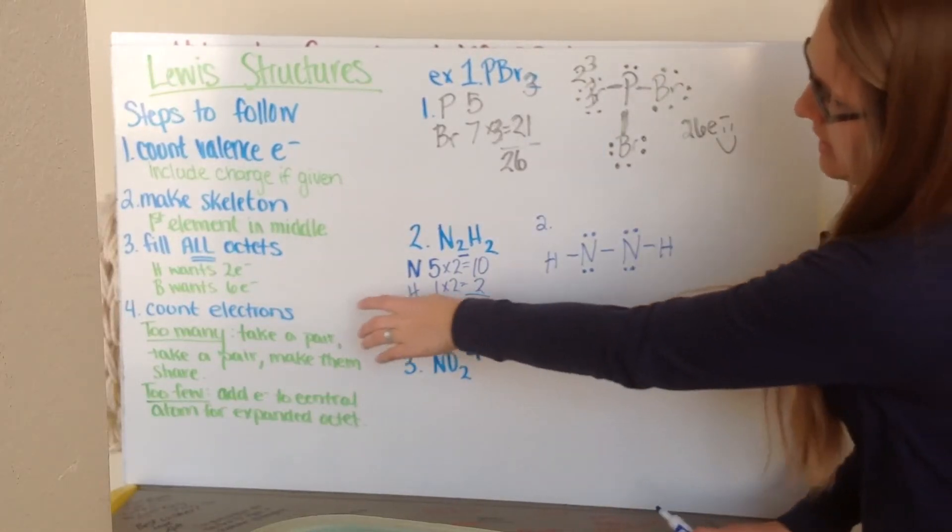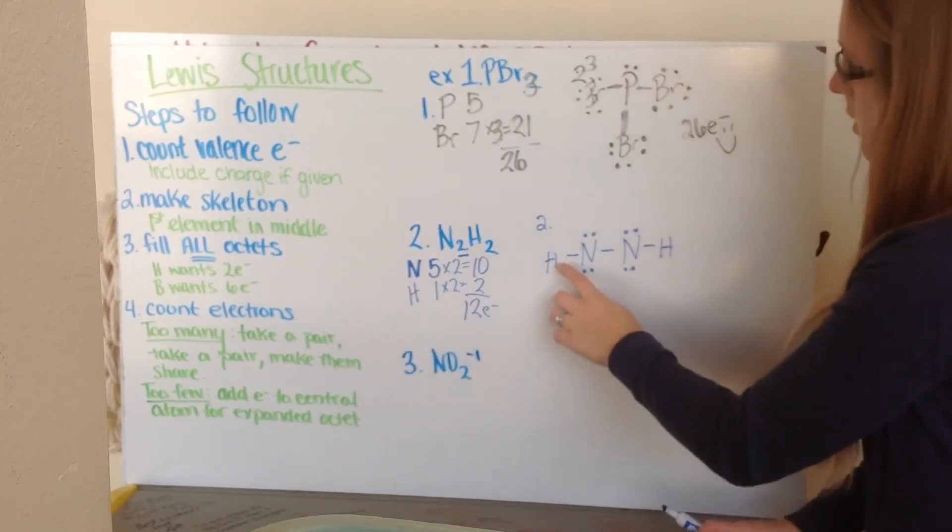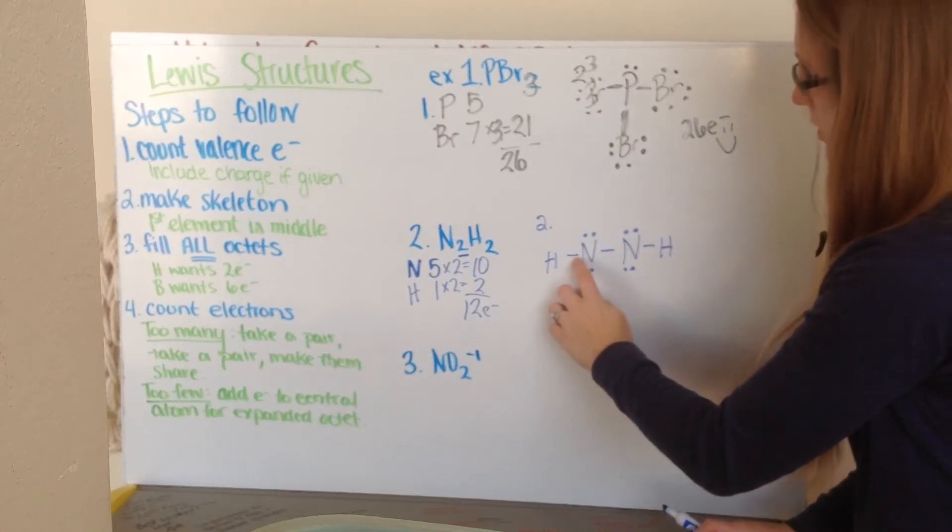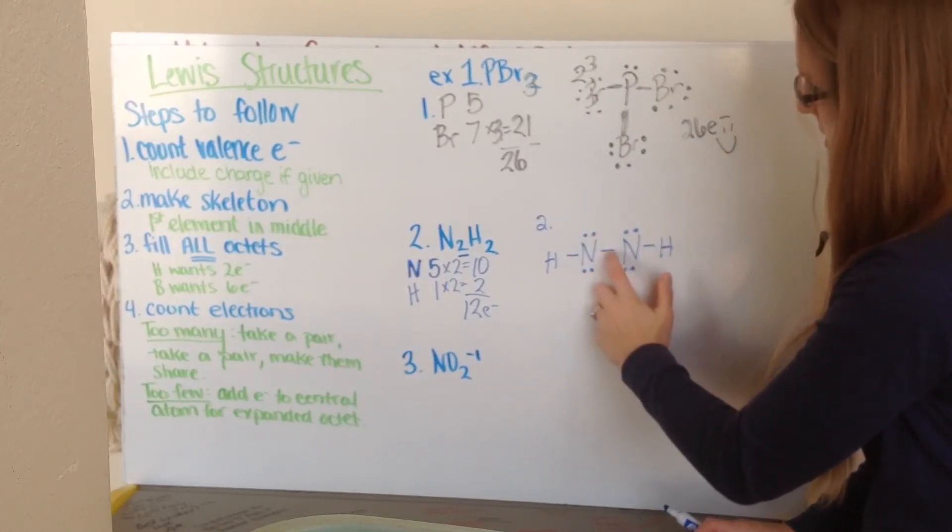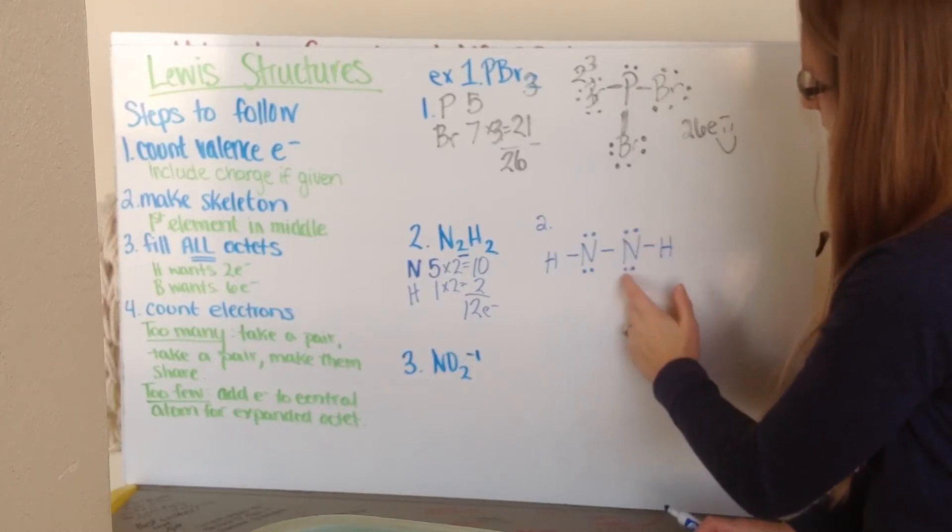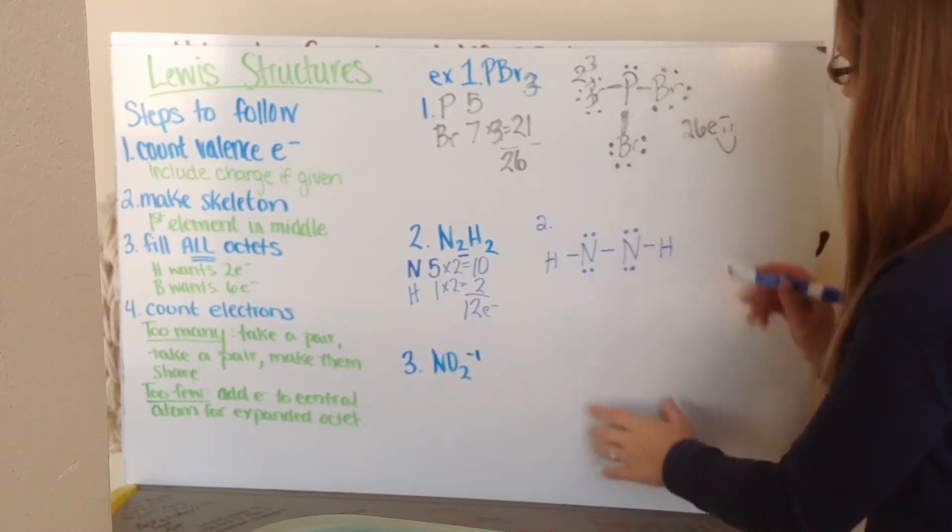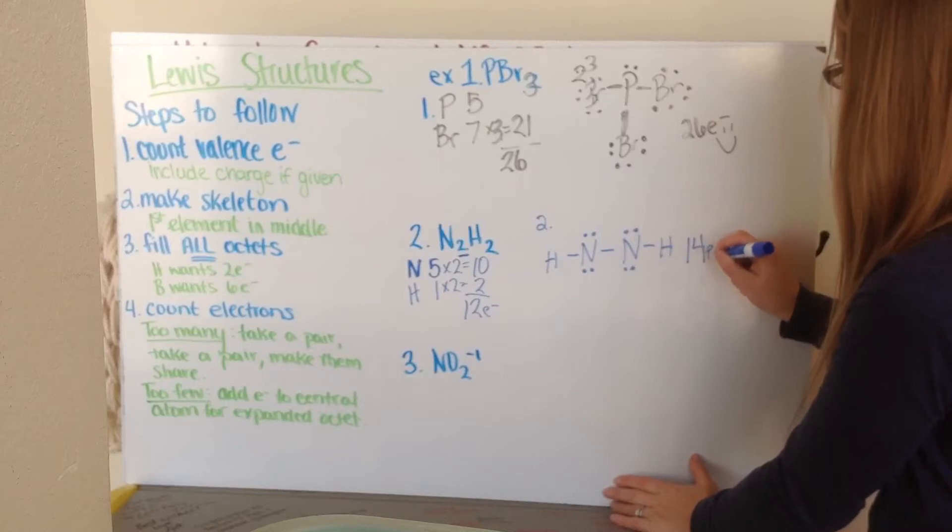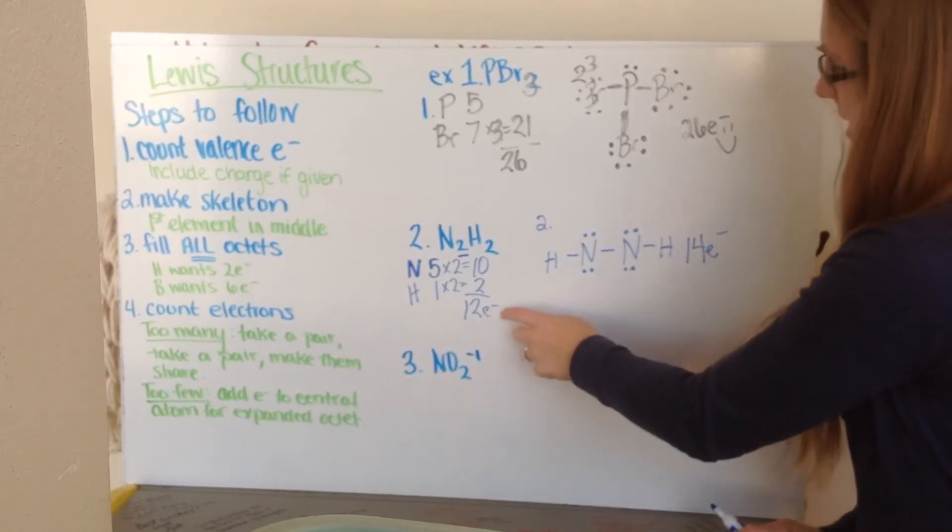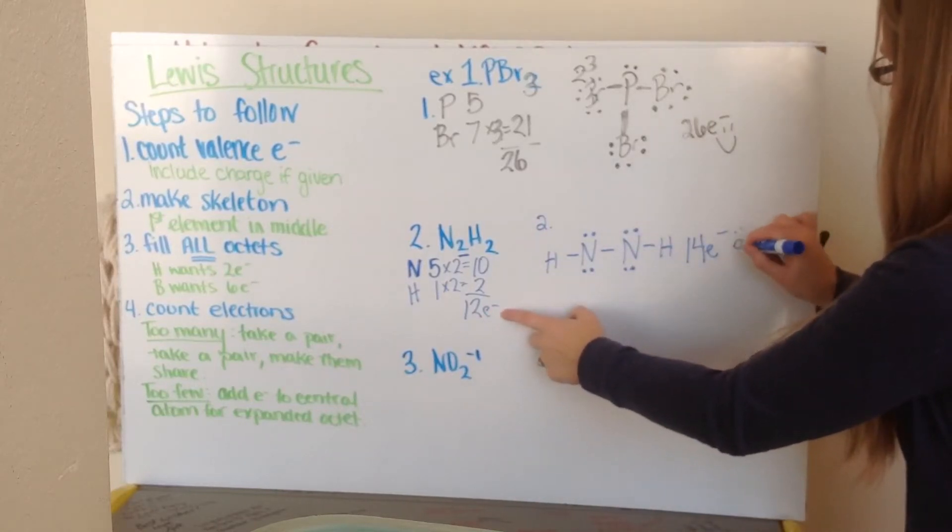So I go ahead then and I count my electrons. My hydrogen has 1, 2, and then I have 3, 4, 5, 6, 7, 8, 9, 10, 11, 12, 13, 14 electrons here. I look back and I say, oh no, I only need 12. Sad face.